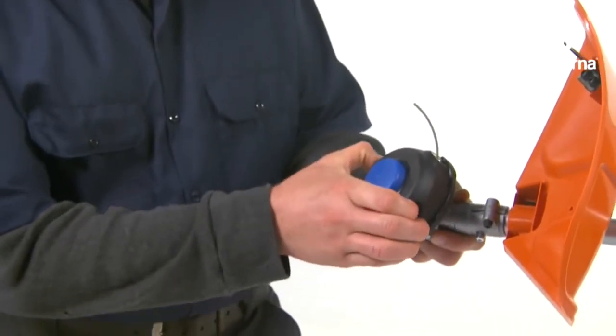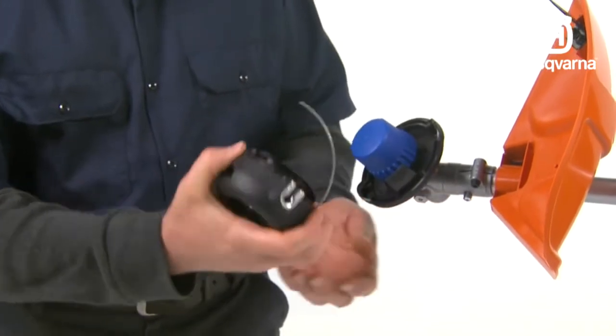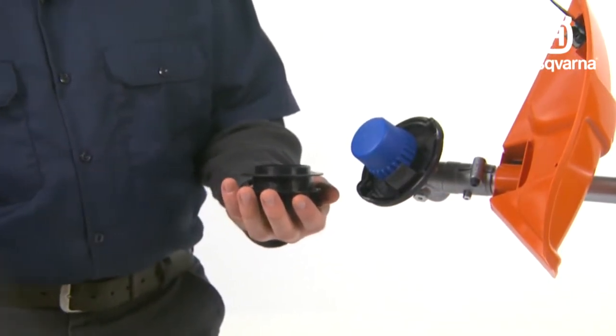First, release the body from the head by pressing the indentations on both sides of the head and lifting off. Remove the spool and discard any leftover line.